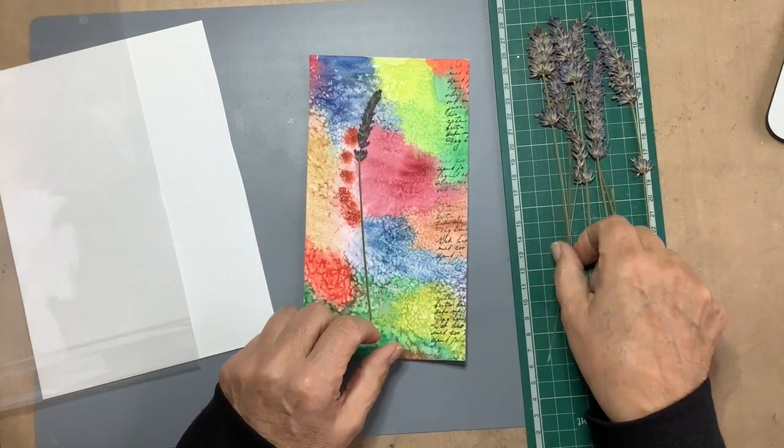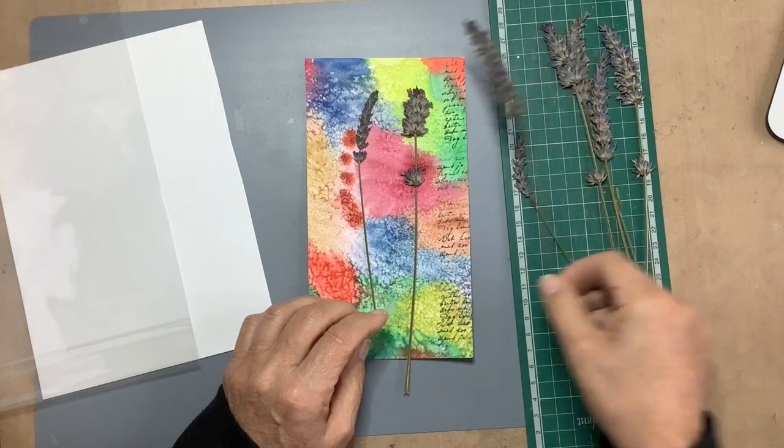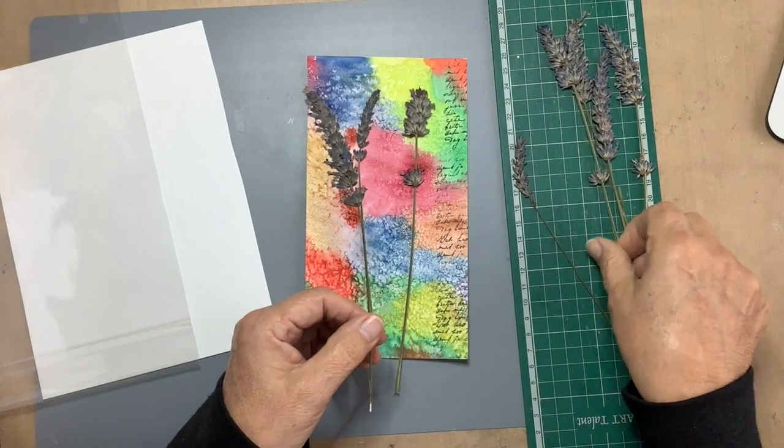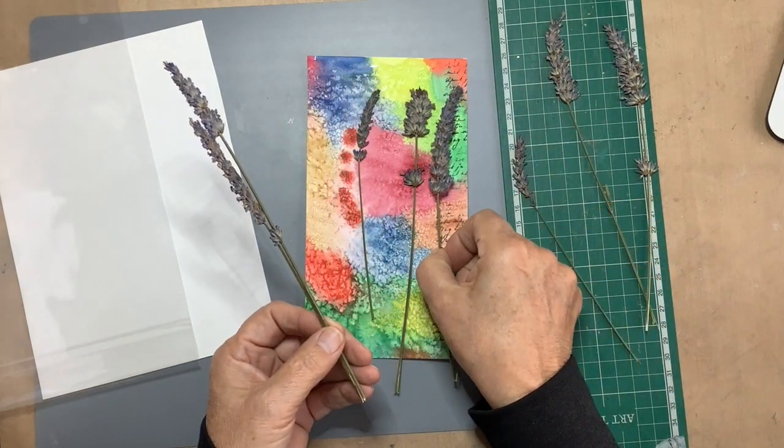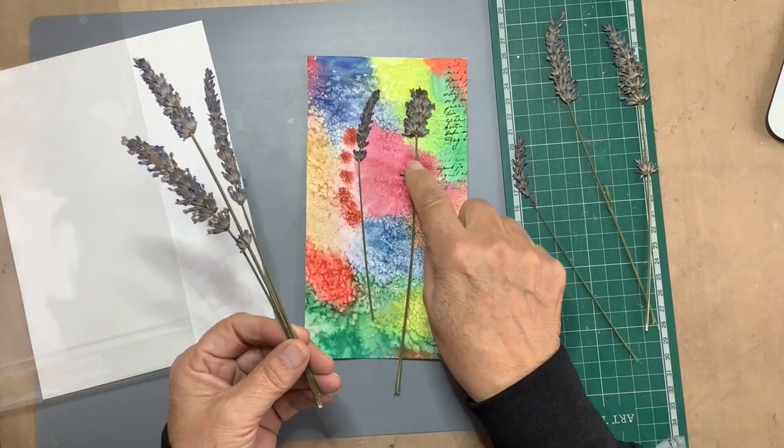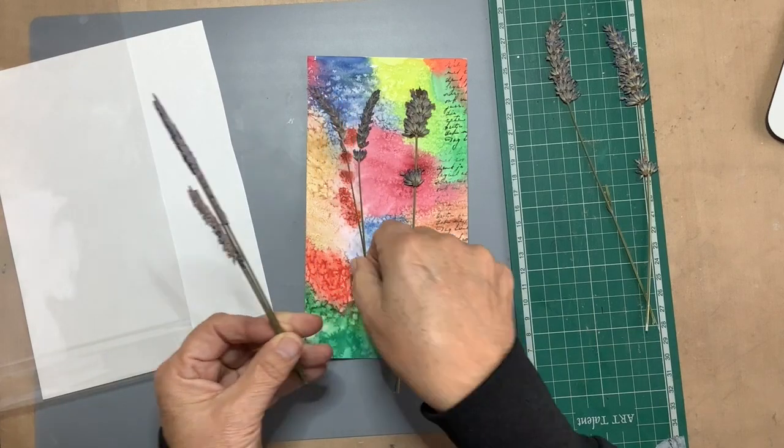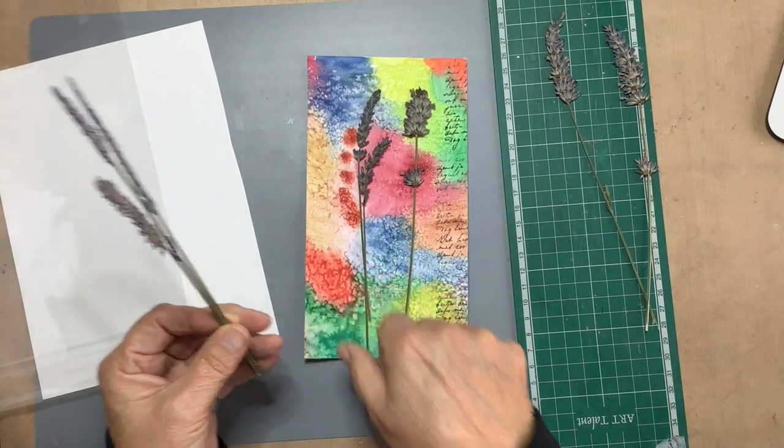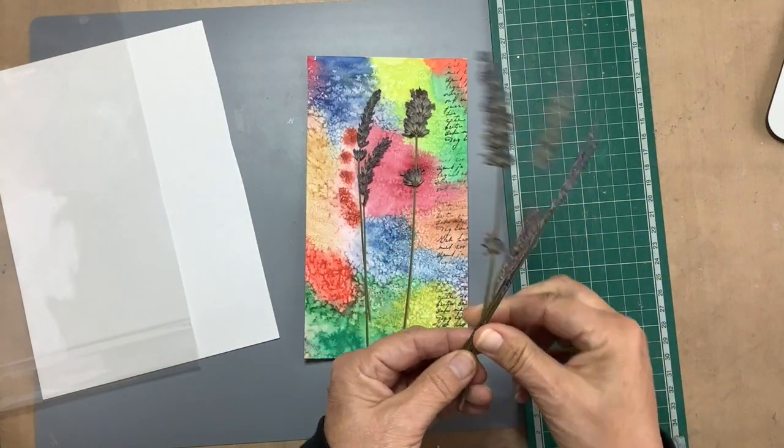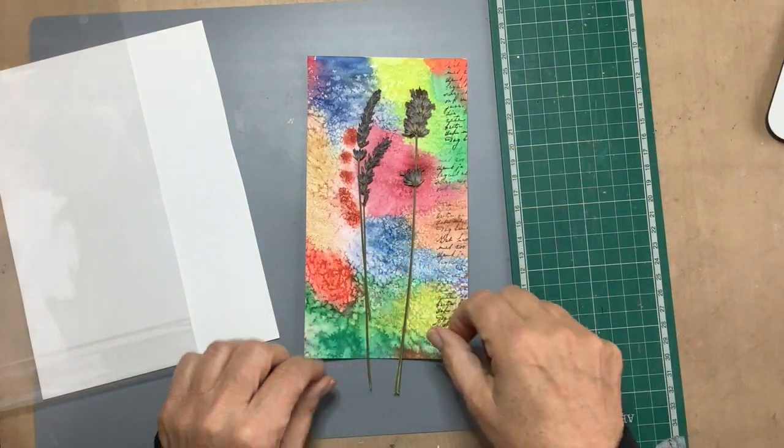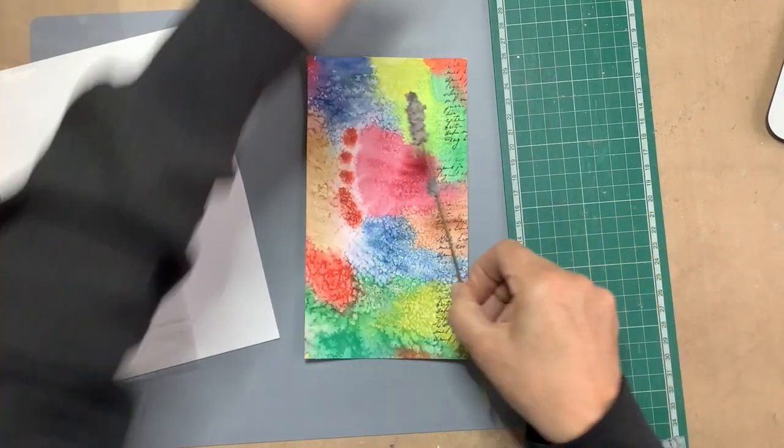This one could do. This I could do. These are a bit too big. I think I like that one. I think I'm going to use this one.